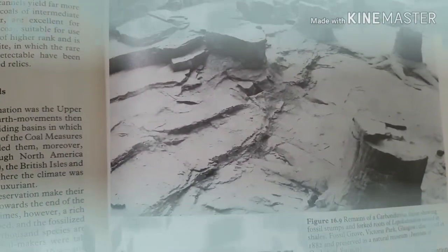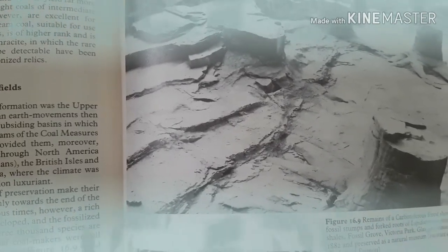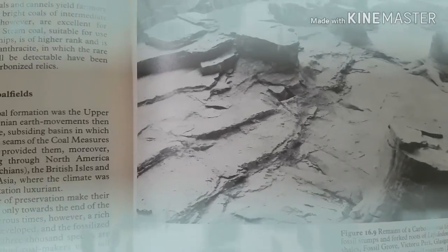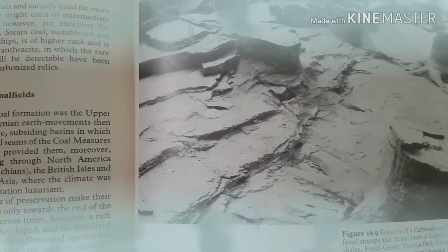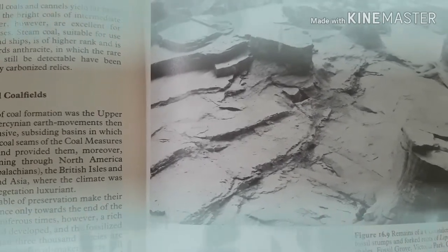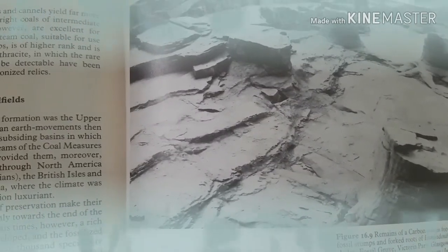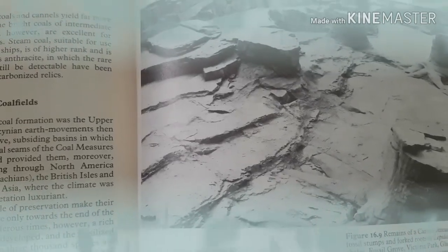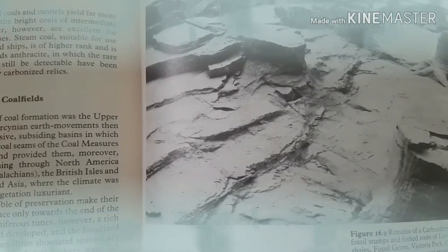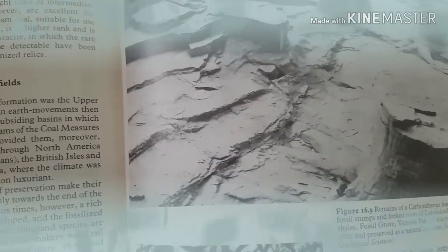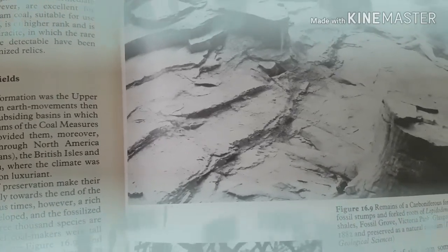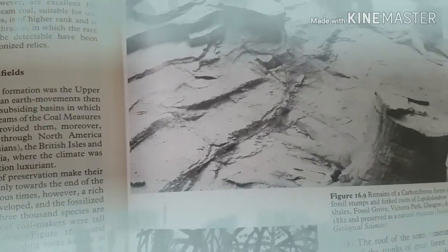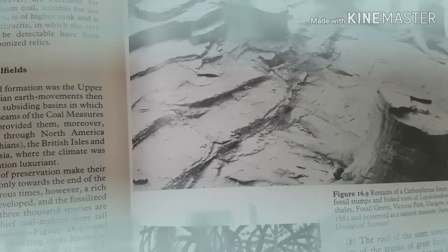On the western side of the Chaghi magmatic belt, there are very well-known formations due to copper and gold deposits — this is the Sandak formation. The Sandak formation is overlain by the Umlo formation. The age of the Umlo formation is Oligocene, and the lithology of the Sandak formation is cross-bedded sandstone.